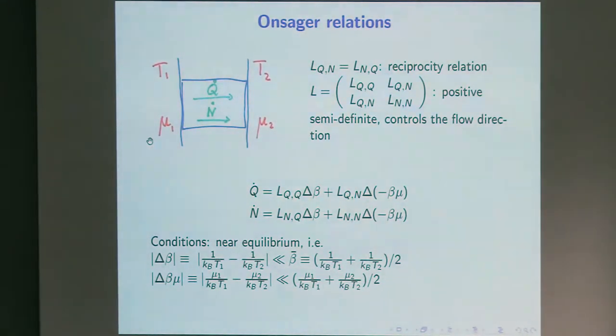So, let's start with the Onsager relations, as you know them all. We have two big reservoirs, T1, at the temperature T1 and with the chemical potential mu1. Here is a second reservoir with a different temperature, different chemical potential. We have some connection in between, and these differences in temperature and chemical potential will induce currents of heat and currents of particles.